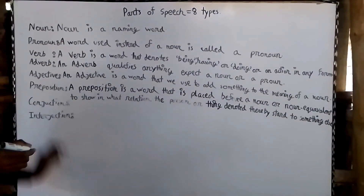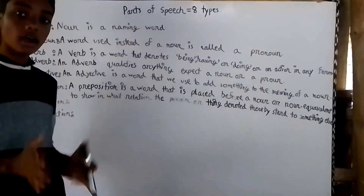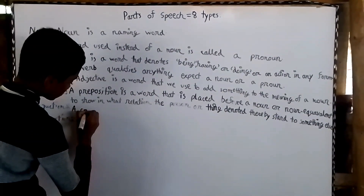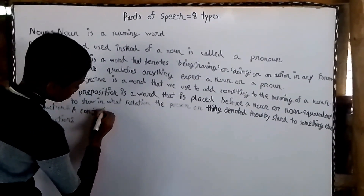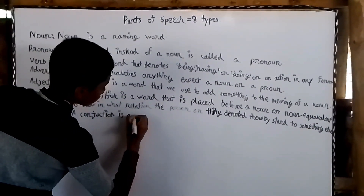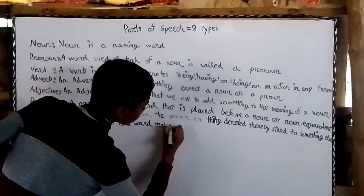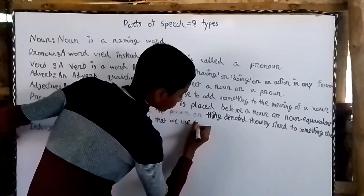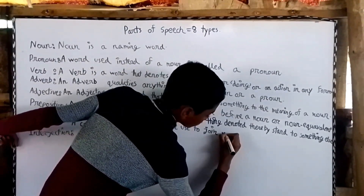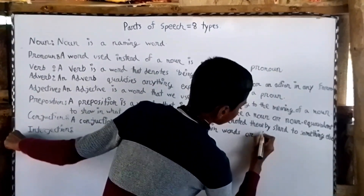What's a conjunction? A conjunction is a word that we use to join words or sentences.